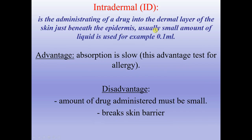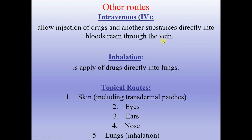Intradermal route is administration of a drug into the dermal layer of the skin, just beneath the epidermis. Usually a small amount of liquid is used — for example, 0.1 milliliters. Advantage: absorption is slow. Disadvantages: amount of drug administered must be small, and it breaks the skin barrier. Intravenous route allows injection of drugs directly into the bloodstream through a vein — it is the quickest and fastest, and importantly, first-pass metabolism is not involved.